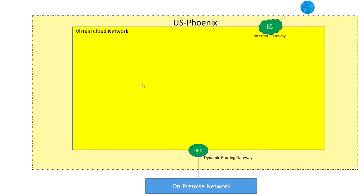The internet gateway is required if you want your instances within the virtual cloud network to be able to connect to the internet — if you want your instance wide open and accessible through the internet. If you have Oracle FastConnect or want to connect to that instance only through your own on-premise network, your LAN and VPN, then you don't need an internet gateway. You need a dynamic routing gateway instead.